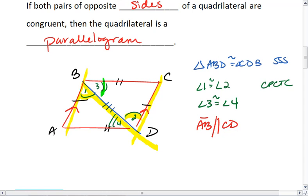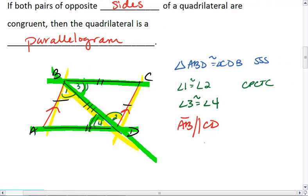Similarly, if angle three and angle four are congruent, again we have two lines cut by a transversal where alternate interior angles are congruent. This means that BC is parallel to AD. And the reason for both of these is the converse to the alternate interior angle theorem.